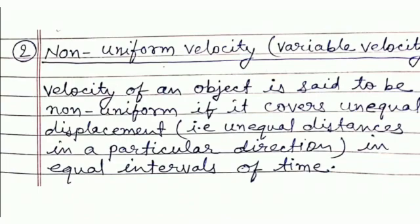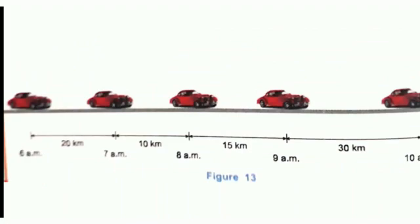Next we have non-uniform velocity or variable velocity. The velocity of an object is said to be non-uniform or variable if it covers unequal displacements — that is unequal distances in a particular direction — in equal intervals of time. In the given figure, a car moves over a horizontal road and covers unequal distances in each hour as shown. So the velocity of this car is non-uniform or variable.